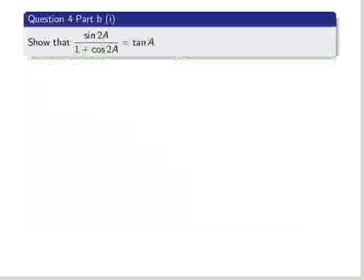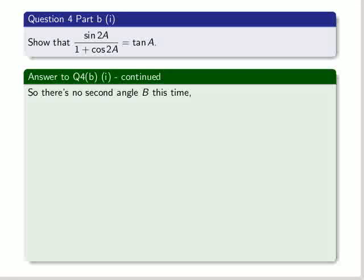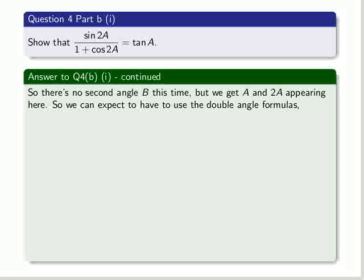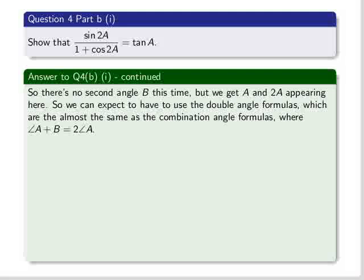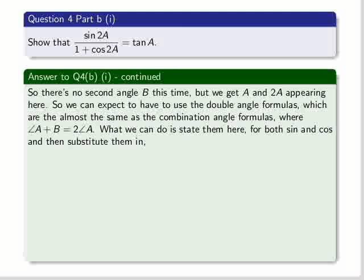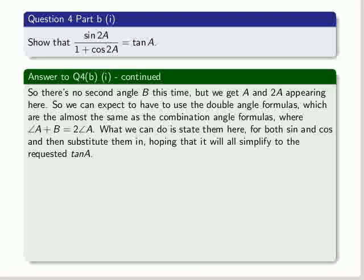So we go into part B now, the first section of it. We have to show that the sine of 2A over 1 plus the cosine of 2A is equal to tan A. So there's no second angle B in this case, but we get A and 2A appearing here. So we can expect to use the double angle formulas, which are almost the same as the combination angle formulas, where the angle A plus B equals 2 times A. So what we can do is state them here for both the sine and the cosine, because we've got sine 2A and cosine 2A here, and then substitute them in and hope that it'll all simplify.